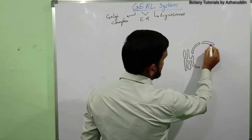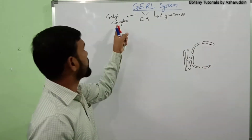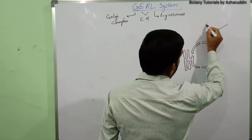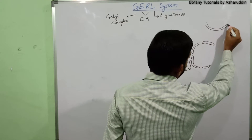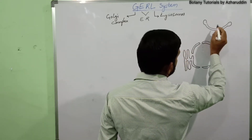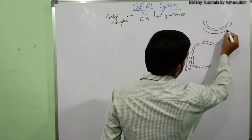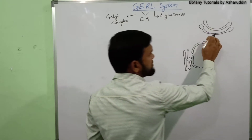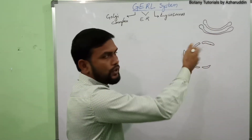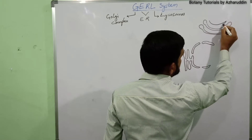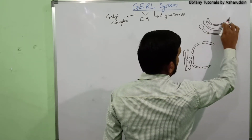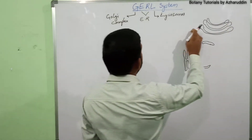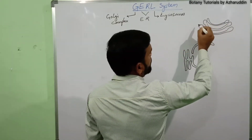Golgi bodies are perinuclear in position, meaning they are near to the nucleus. They have two phases: a concave phase and a convex phase. The concave phase is always present towards the plasma membrane and the convex phase is always present towards the nucleus. These are the cisternae of the Golgi bodies.